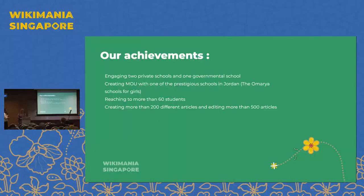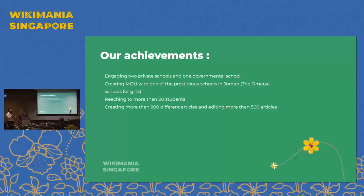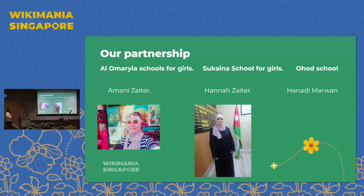Our achievements include engaging two private schools and one governmental school in Jordan. We created a Memorandum of Understanding with a prestigious school called Umaria School — a private school with two branches, one in Amman and one in Zarqa, mainly for girls. We have reached more than 60 students, mostly from primary and secondary school. They created over 200 different articles and edited more than 500 articles. This is an overview of our partnership.